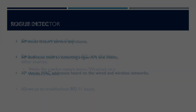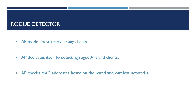Rogue Detector Mode. Again, this doesn't serve any clients. Instead, it dedicates all of its time to detecting rogue APs and clients within our network. Whilst the AP is in Rogue Detector Mode, it constantly checks for MAC addresses heard on the wired and wireless network, and reports these back to the wireless LAN controller.